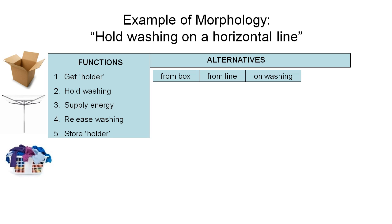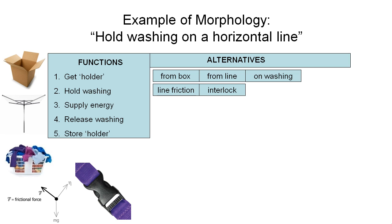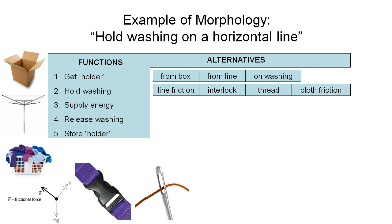If we think about how we're going to hold the washing, there are a variety of ways. We could utilize line friction to keep the washing in place. Perhaps we would develop some sort of interlock like a clip which would hold the washing in place on the line. There may be some way to thread the washing onto the line to eliminate the need for a separate holder. We could even use cloth friction as a means of keeping it in place.